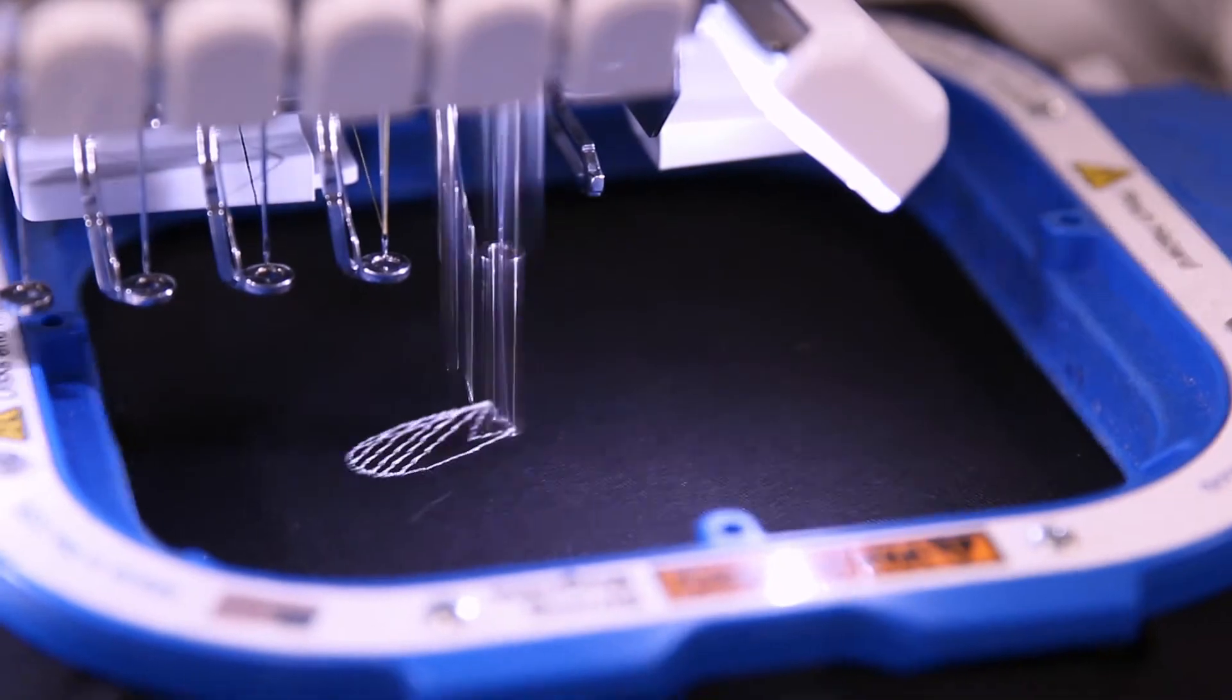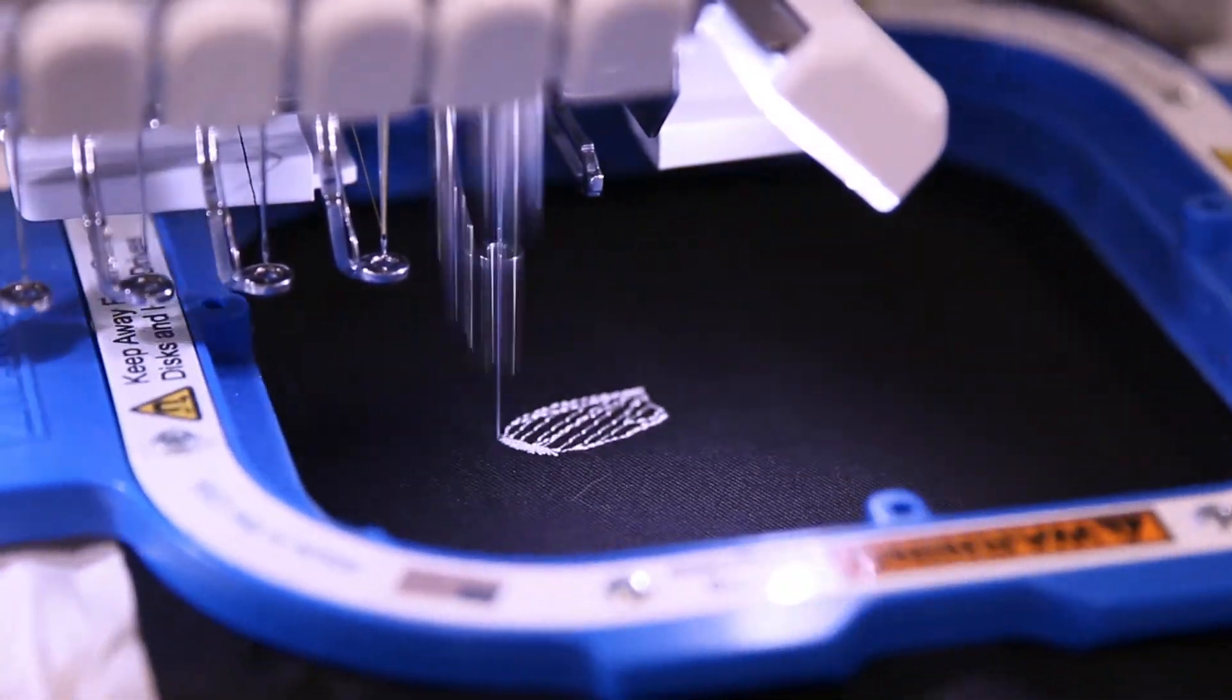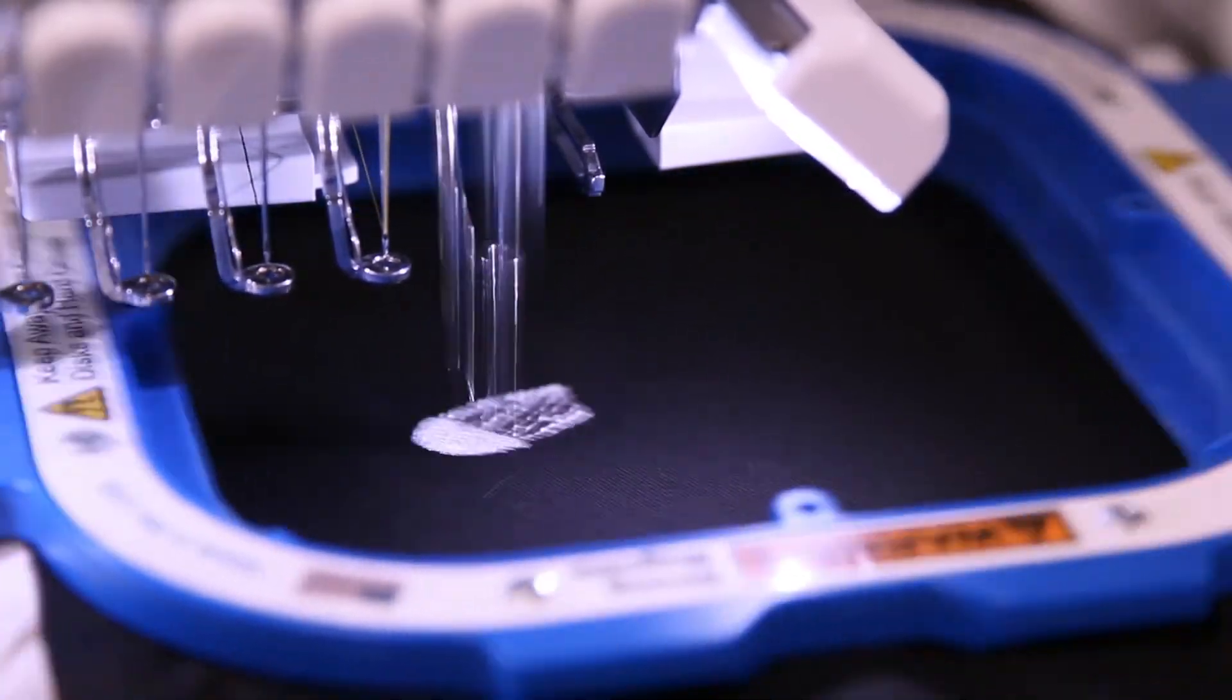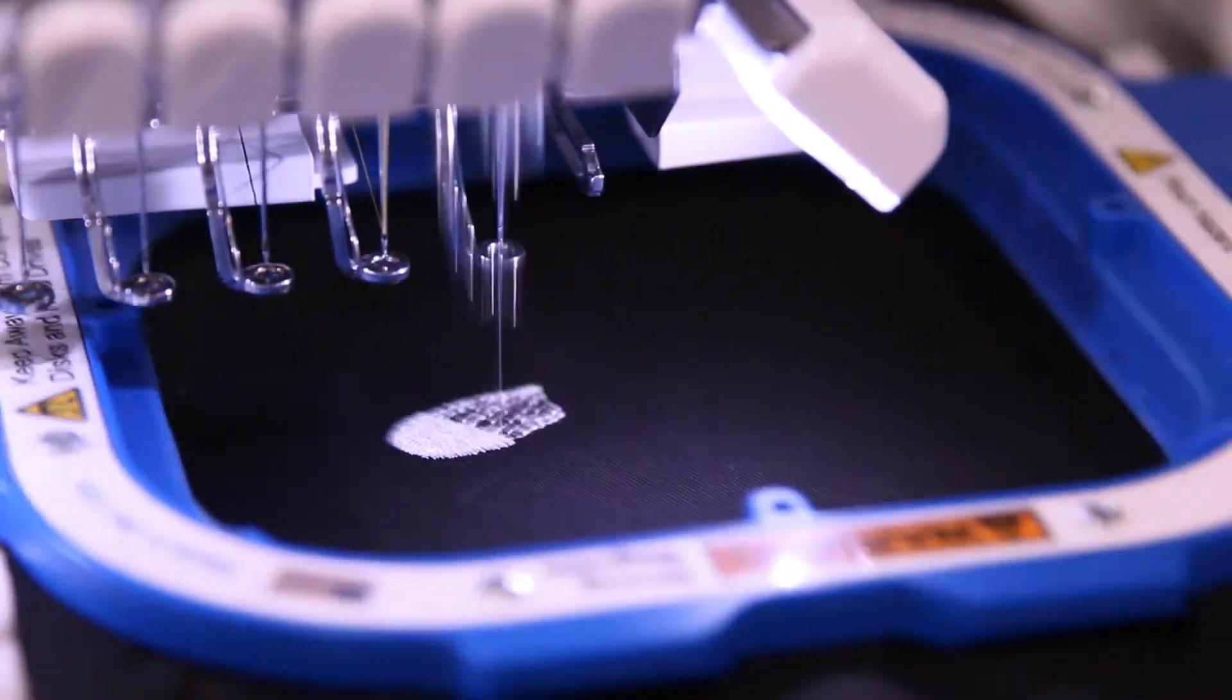Common problems are related to threads coming undone and breaking. If this is to happen, stop the machine and assess the upper needles as well as the bobbin to see if there was a problem related there.